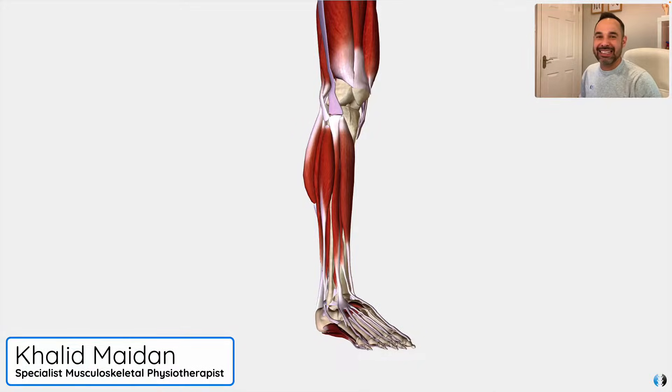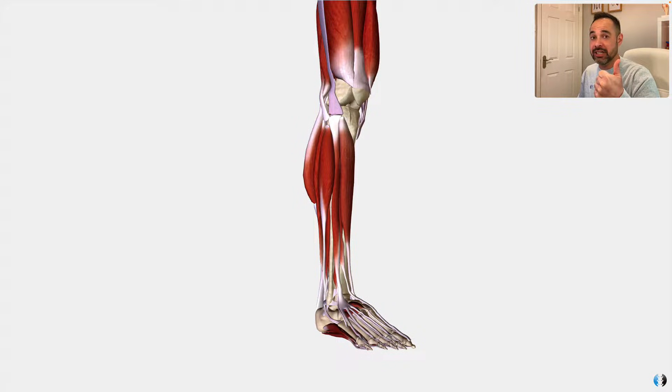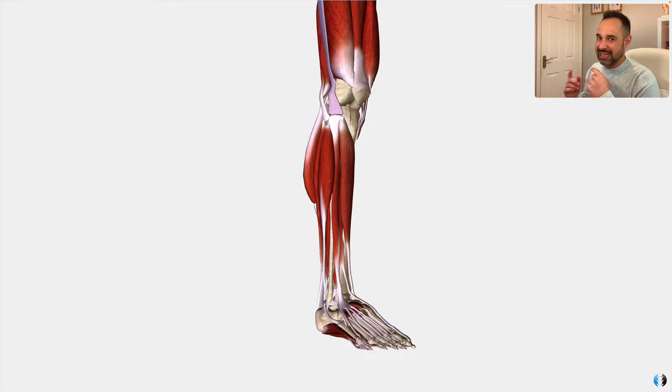In this tutorial, we're going to show you all the major ligaments of the ankle joint using our amazing 3D anatomy model. Hey guys, Khaled here. Welcome back to Clinical Physio. Today, we're going to be looking at the key ligaments of the ankle joint — the lateral ankle ligaments, the deltoid ligament on the medial side, as well as the distal tibiofibular syndesmosis.